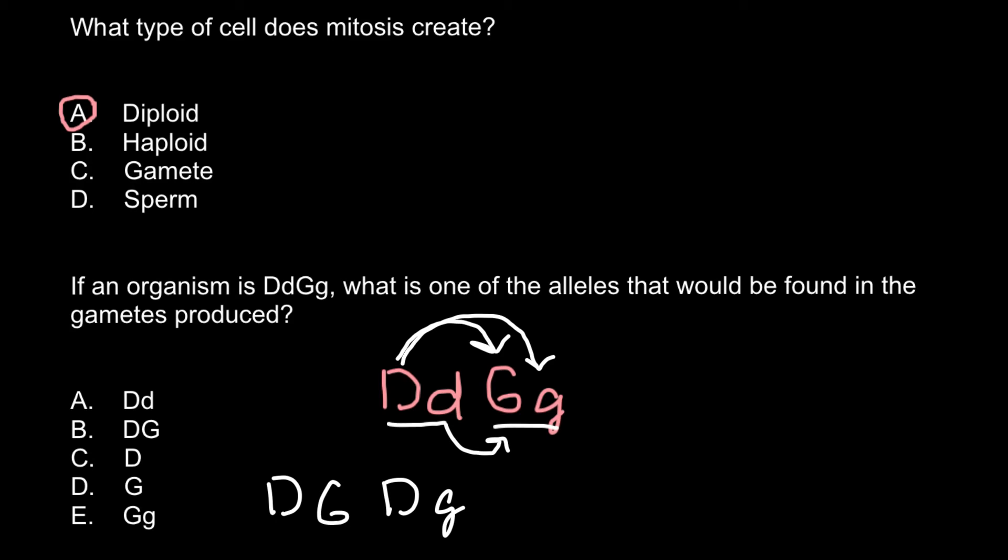Third variant would be small d and capital G. And the fourth variant would be small d and small g. So the total number of variants of the gametes that this diploid organism can produce is listed here.